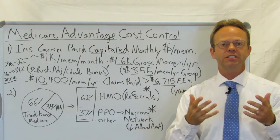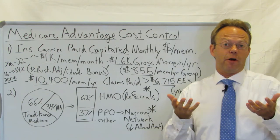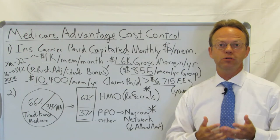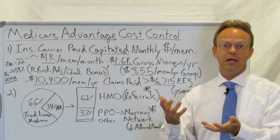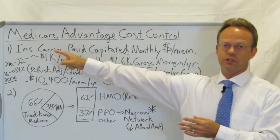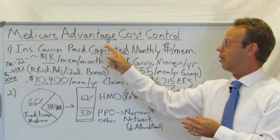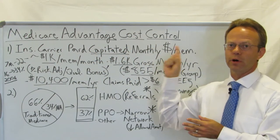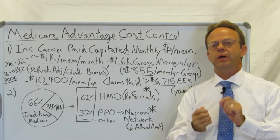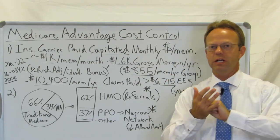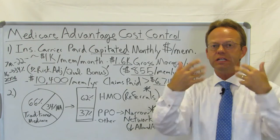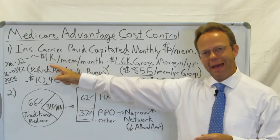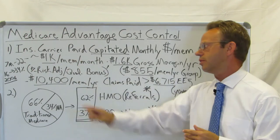Medicare Advantage is the plan where people on Medicare can receive their insurance through a commercial insurance company as opposed to through traditional Medicare and the government. Those insurance carriers are paid a capitated monthly dollar amount per member — the government basically writes them a check each month for every enrollee, and then they provide insurance for those folks. That dollar amount is about $1,000 per member per month.